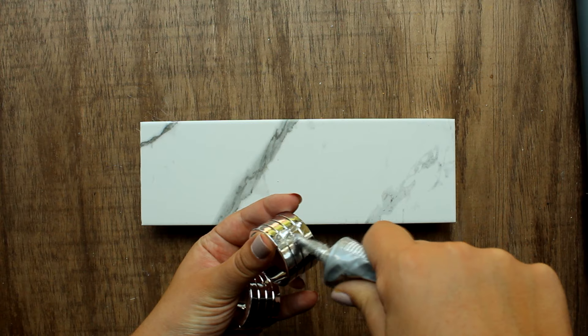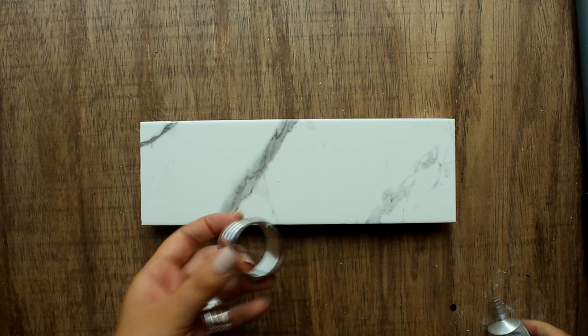To finish it off, I took the two remaining napkin rings and glued them to each side for a decorative accent.